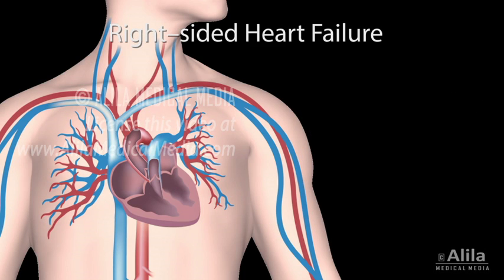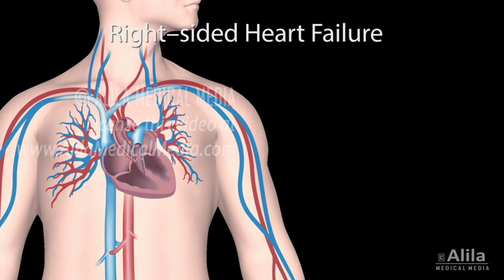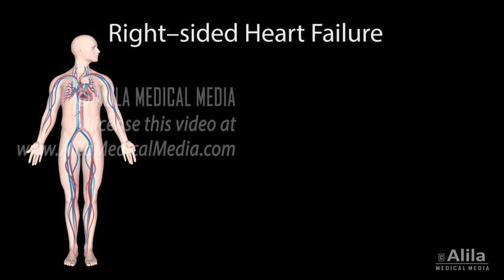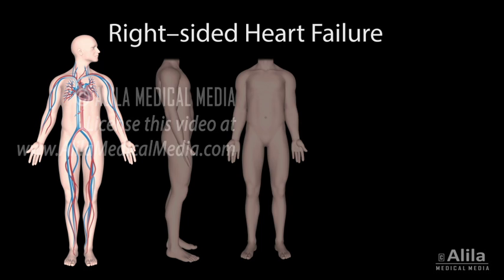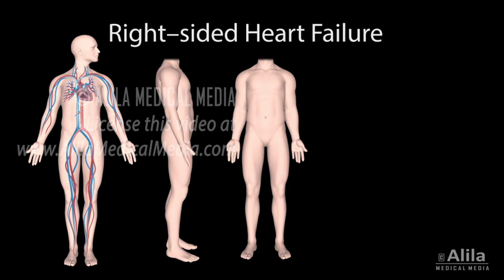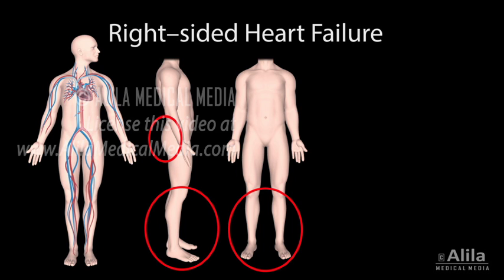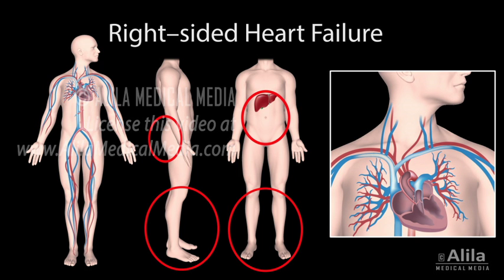As the right ventricle pumps out less blood, the blood backs up to where it came from — the systemic circulation. This results in abnormal fluid accumulation in various organs, most notably in the feet when standing, the sacral area when lying down, the abdominal cavity, and the liver. The fluid status can be assessed by examining the distension level of the jugular vein.